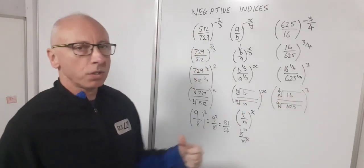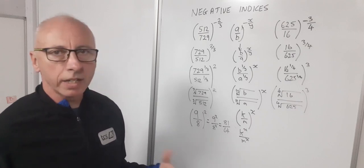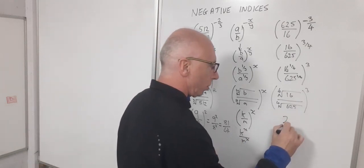Now the fourth root of 16, two twos are four, four twos are eight, eight twos are 16. So the fourth root is just two.